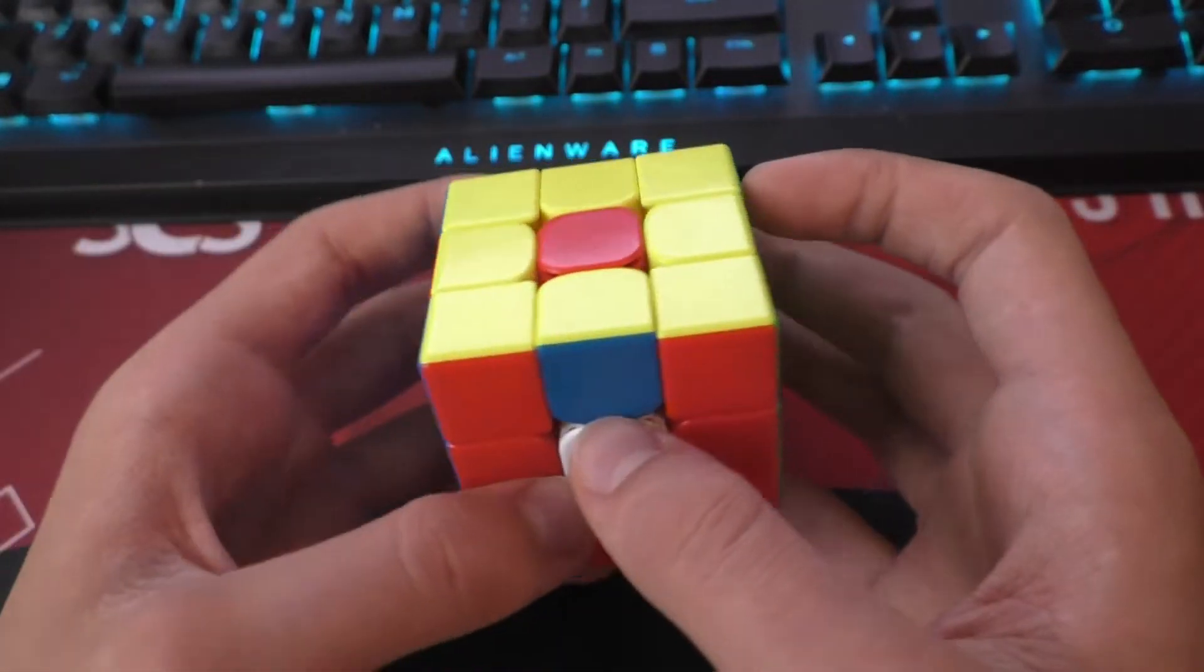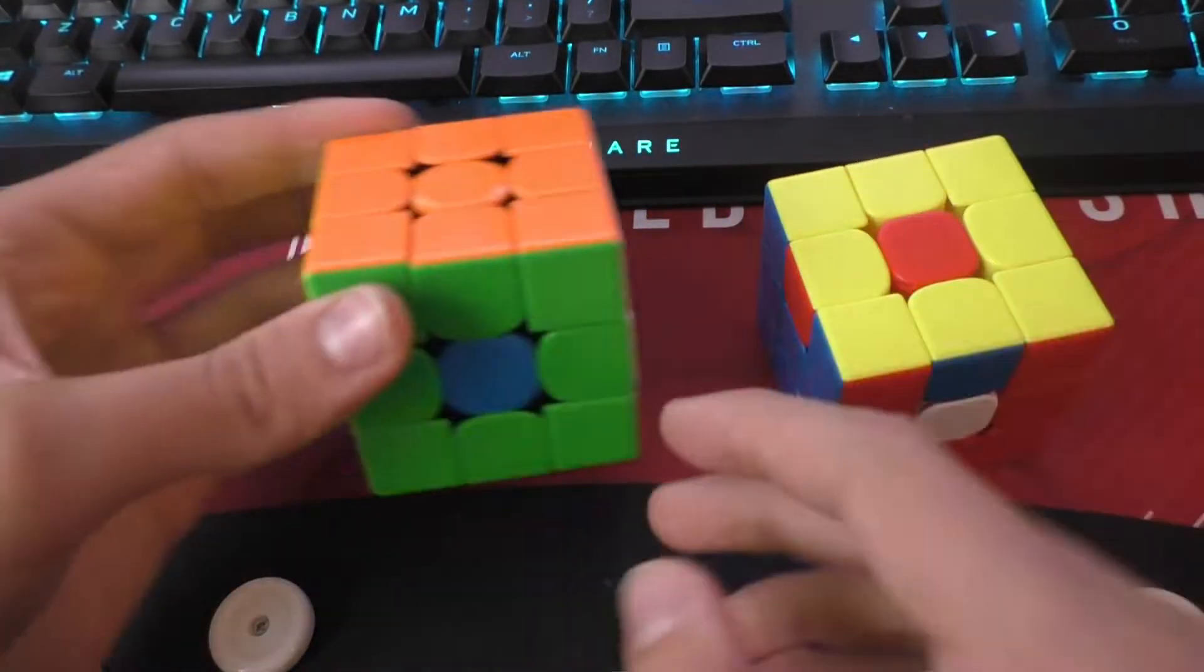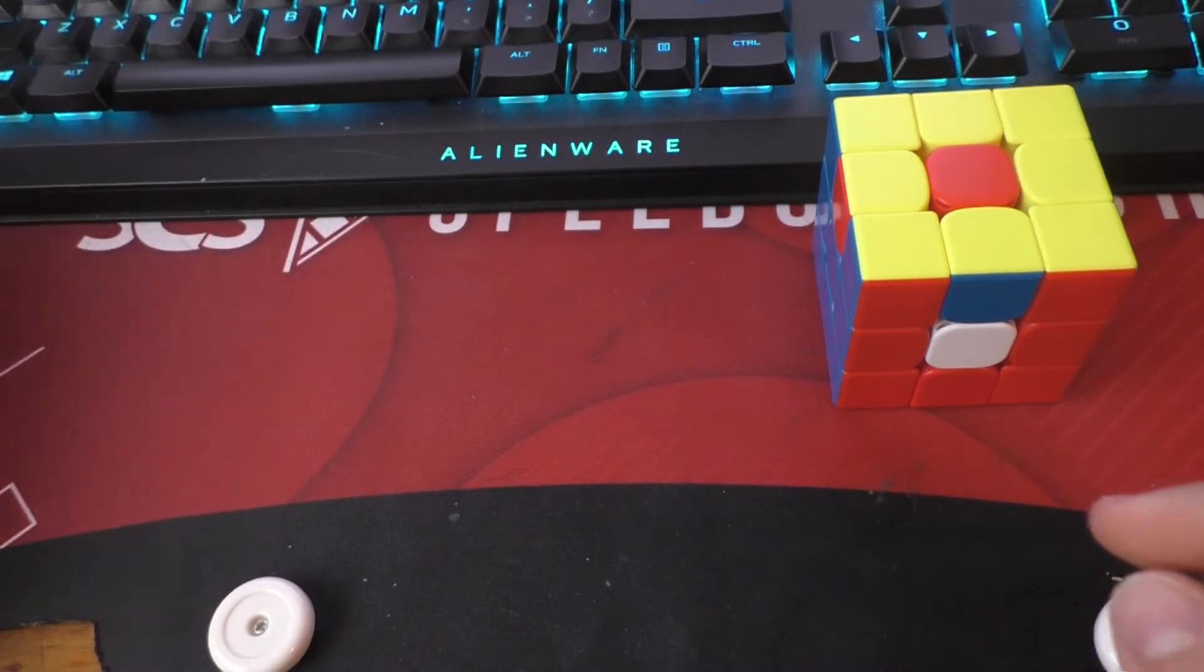Right now I have parity in a 3x3, and it is pretty obvious that this is just because the centers are misaligned. But how come I can't just fix the centers like this and technically have edge parity on a 3x3?